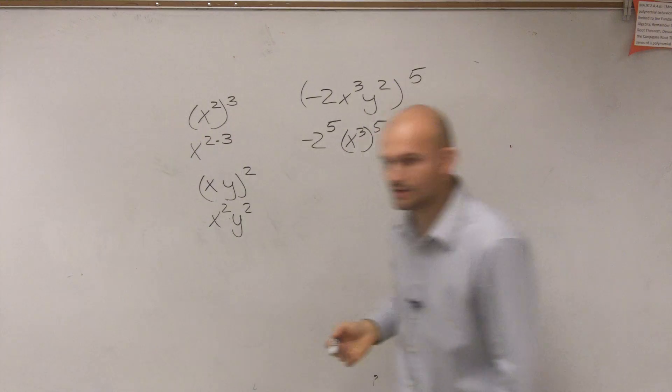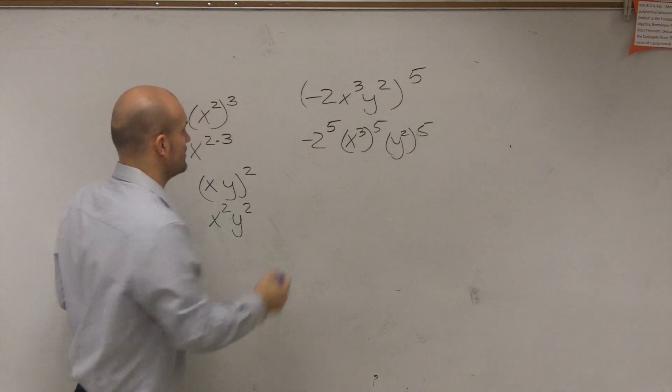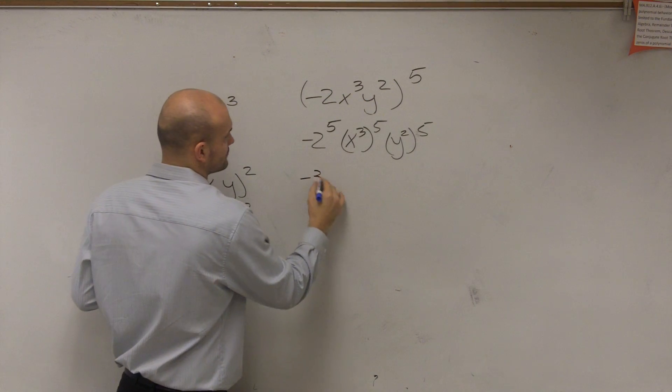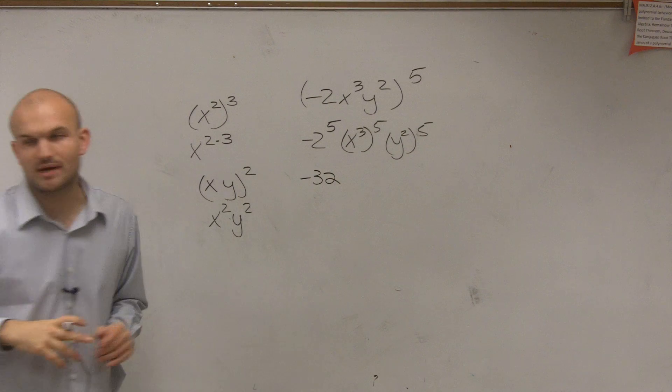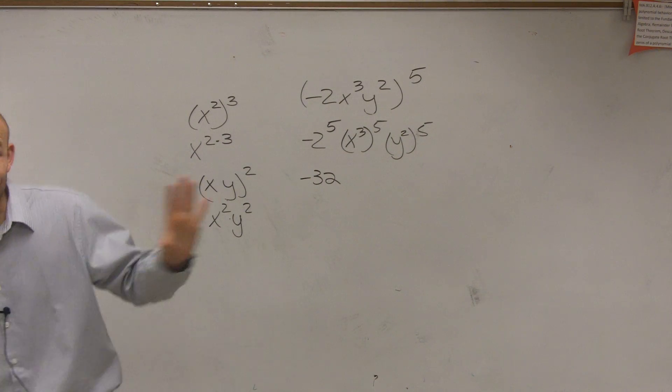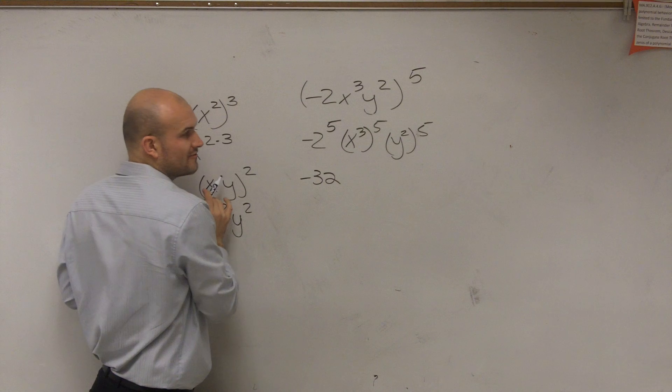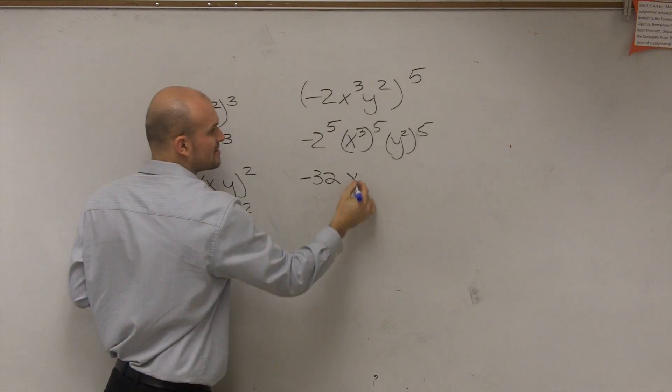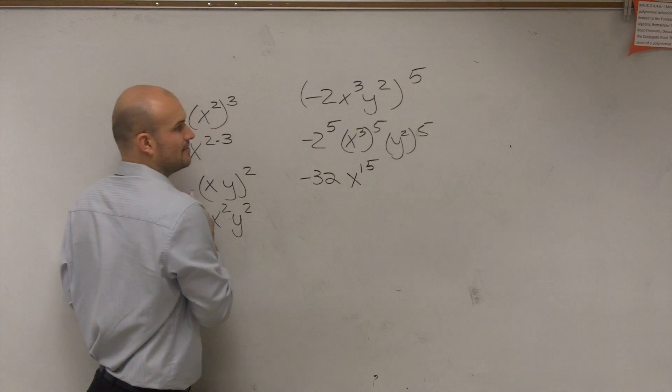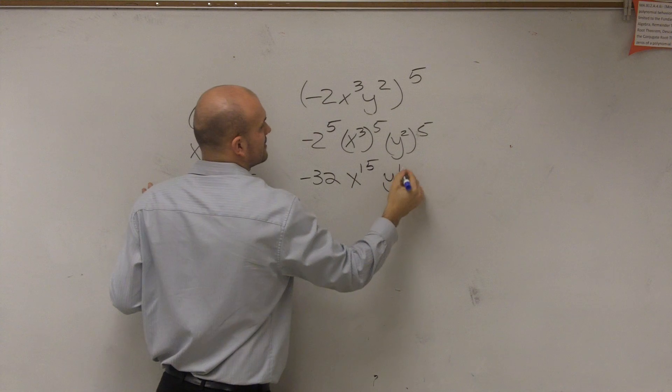Well, this is just negative 2 to the fifth, which is going to be negative 32. It's negative 2 multiplied by itself five times. Since it's an odd exponent, it's going to be negative. For x cubed raised to the fifth, 3 times 5 is 15, and then y to the tenth power.